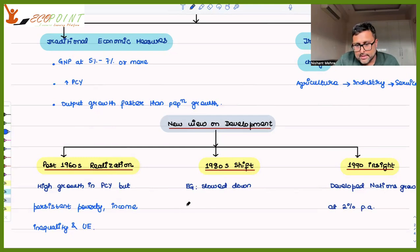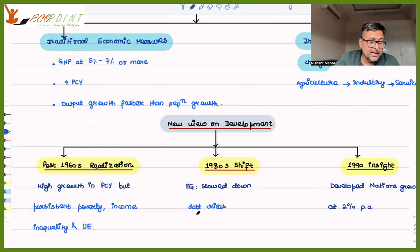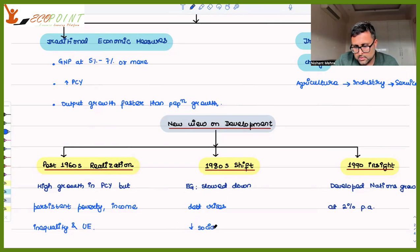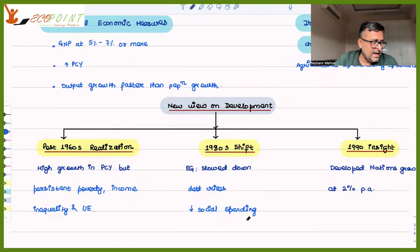In the 1980s it was also realized that in many nations economic growth had slowed down, and many governments were facing a debt crisis. Due to that debt crisis, there was reduced social spending — governments cut spending on education and health. Because they were facing debt crises and slowing growth, they were not able to maintain the momentum for development they had earlier.